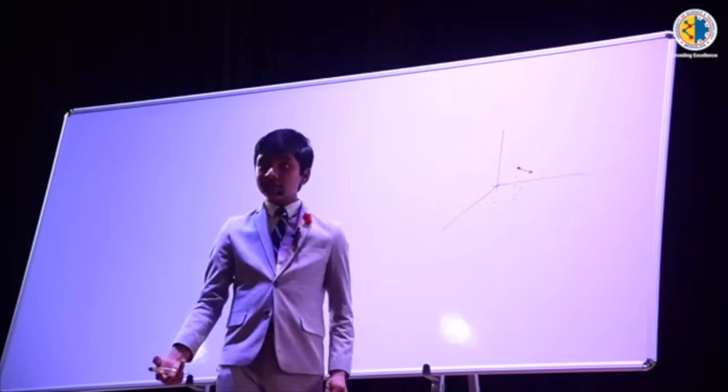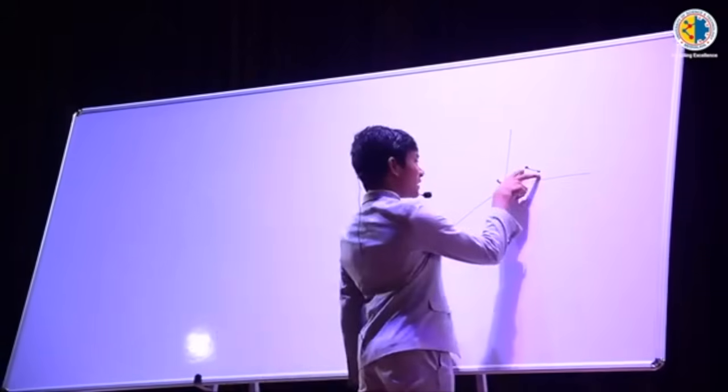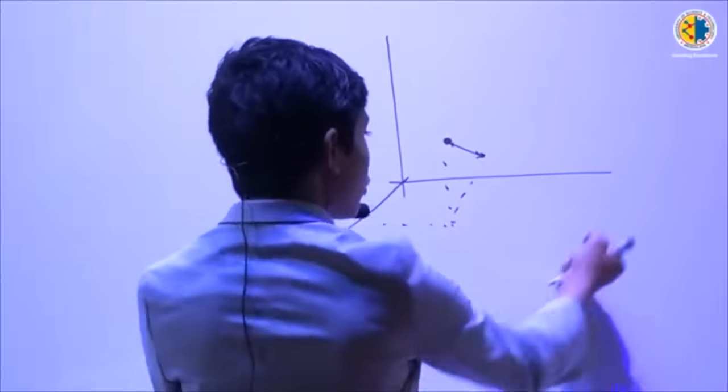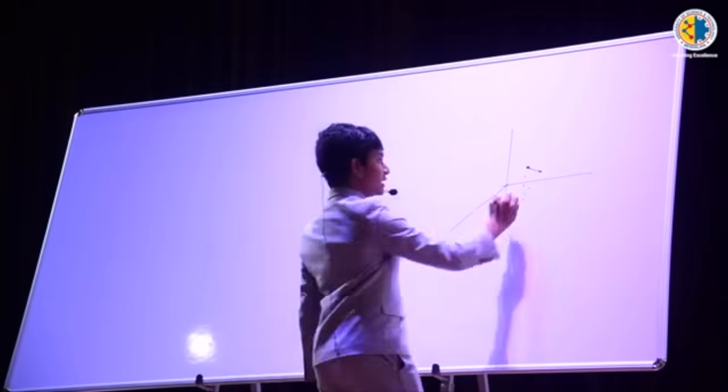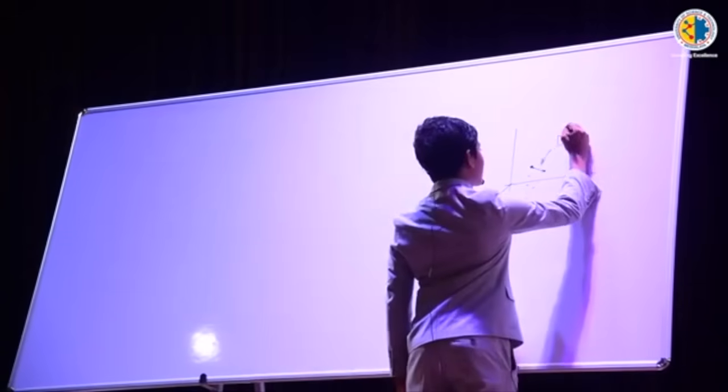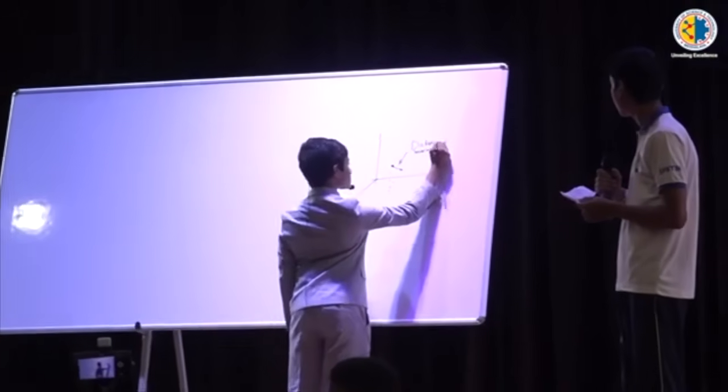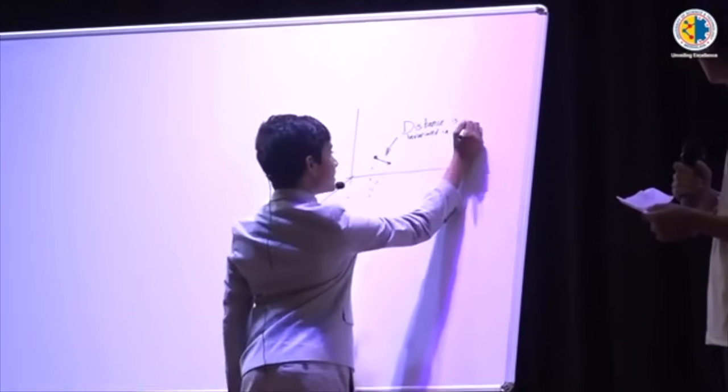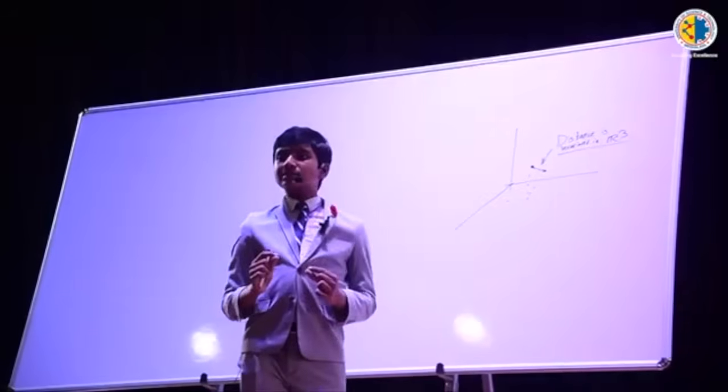Velocity can change, acceleration can change, position can change, but the only thing that doesn't change is distance. No matter if you rotate your reference frame or translate your reference frame. Distance is invariant in R3, but this changes when you introduce the fact that the speed of light has to be constant.